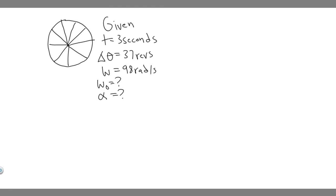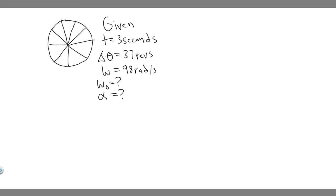We're trying to solve for the constant angular acceleration, which we call alpha. Looking at the kinematic equations, none of them directly solve for alpha given just these three variables. So what we have to do first is solve for omega zero, the initial angular velocity. Once we have omega zero, we'll be able to solve for alpha.